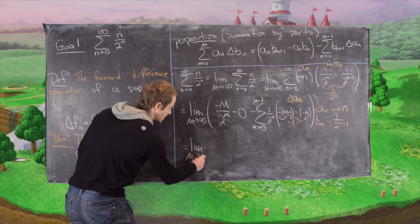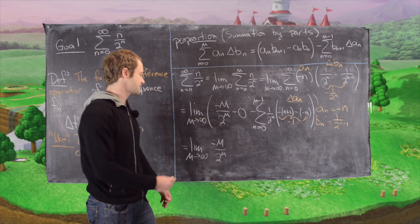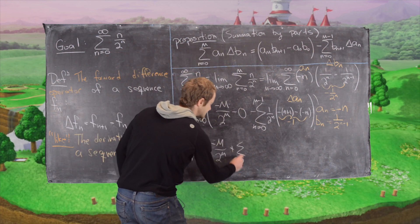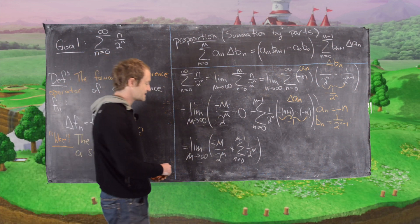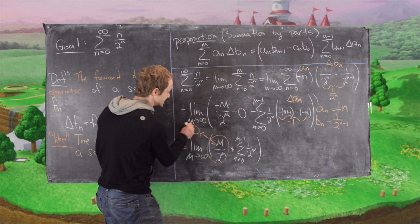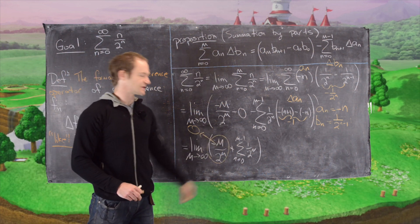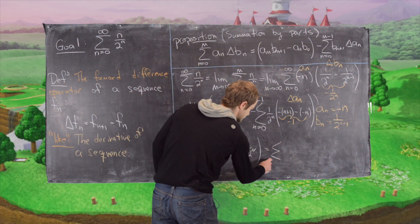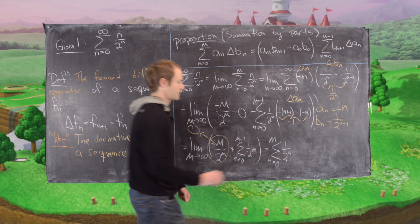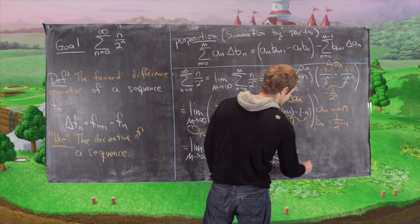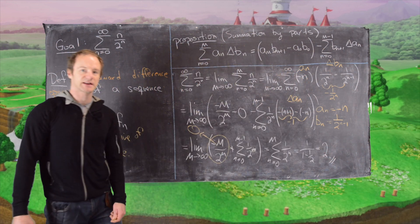This simplifies to the limit as m approaches infinity of minus m over 2 to the m, plus the sum n equals 0 to m minus 1 of 1 over 2^n. As m goes to infinity, the term minus m over 2^m goes to 0 because the exponential dominates the polynomial. So we get the sum n equals 0 to infinity of 1 over 2^n, which is a geometric series summing to 1 over (1 minus 1/2), giving us 2 — the expected answer.